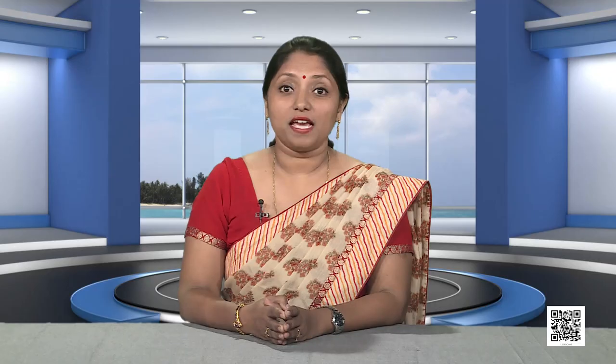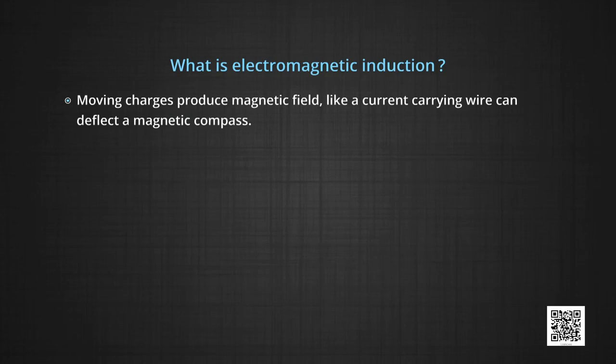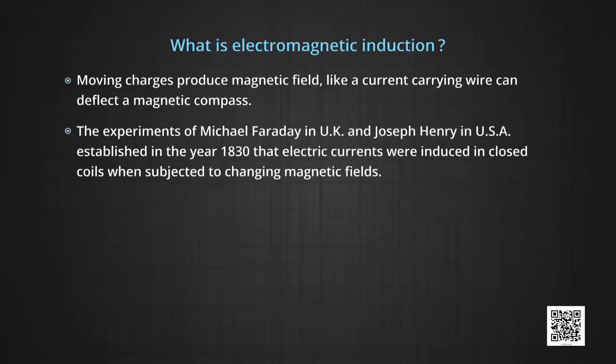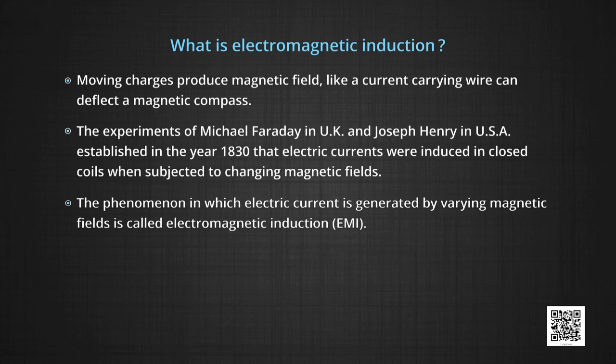What is electromagnetic induction? We have seen in earlier chapters that moving charges produce a magnetic field — like a current-carrying wire can deflect a magnetic compass. A very obvious question that comes to mind is whether the reverse is also true: can a moving magnet or a changing magnetic field also produce electric current? The answer is a resounding yes. The experiments of Michael Faraday in the UK and Joseph Henry in the USA established in the year 1830 that electric currents were induced in closed coils when subjected to changing magnetic fields. The phenomenon in which electric current is generated by varying magnetic fields is called electromagnetic induction.